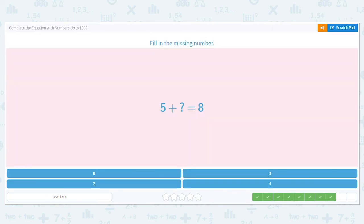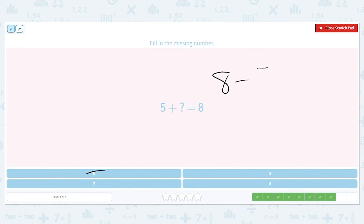Next problem says, 5 plus blank equals 8. Now again, if you're totally stuck, you can go down at the bottom and try each one, like 5 plus 0. Does 5 plus 0 equal 8? No. So I would eliminate that answer. But again, we can also use subtraction. So we can work backwards. 8 minus 5 equals what? It's 3. So where does that 3 go? It goes right in here. So 5 plus 3 equals 8.